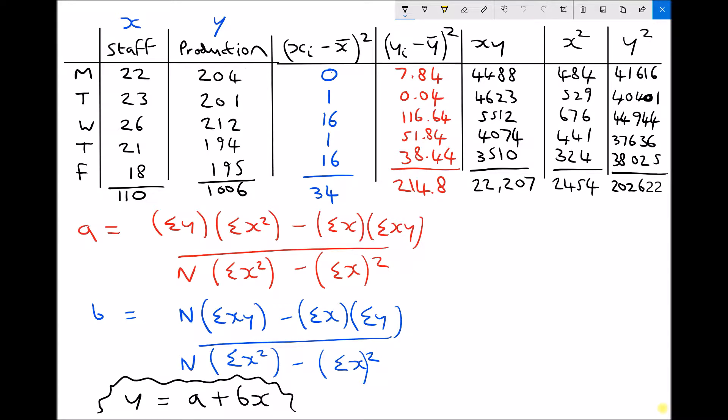Now finally, we're going to look at the formula for our regression line. The regression line is essentially the line of best fit between our two sets of data: the number of staff and the rate of production.